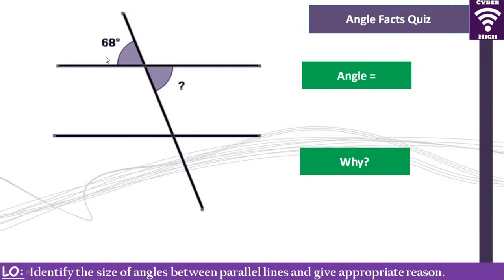Let's start with the first question. You have been given an angle marked 68 degrees, formed by two parallel lines. In this quiz you need to identify the size of the angle with the question mark and give a reason. Every time a question is displayed, determine the size of the angle and then give the reason. I will be slightly slower so you can shout out the answer before I reveal it.